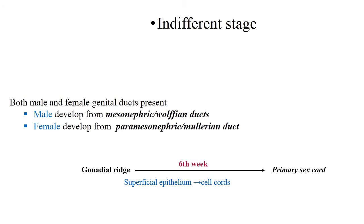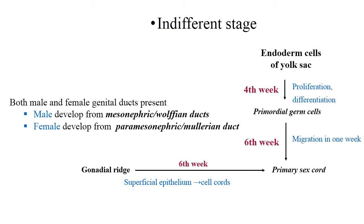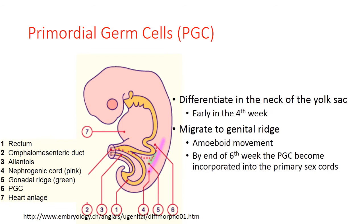In the gonadal ridge, the superficial epithelium forms cell cords, which are transferred to the primary sex cords. In this stage, endoderm cells of the yolk sac start proliferating and differentiating into primordial germ cells, and on the sixth week migration to the primary sex cords occurs.